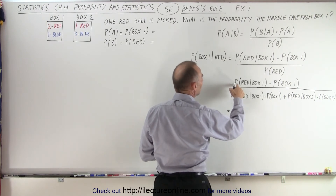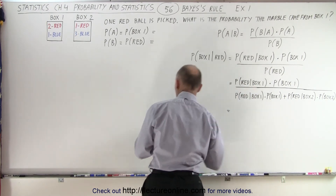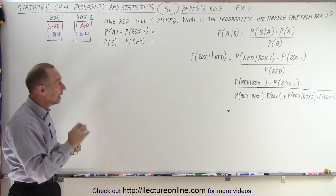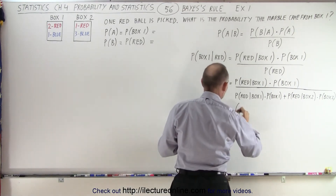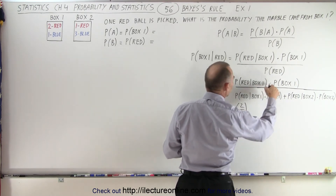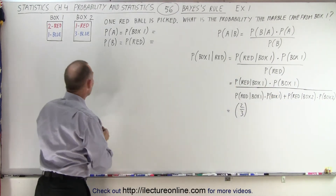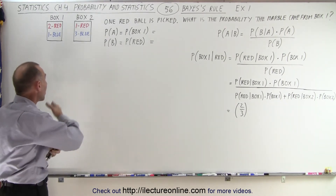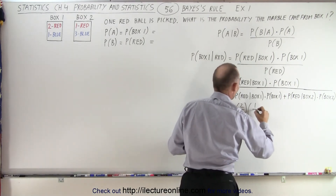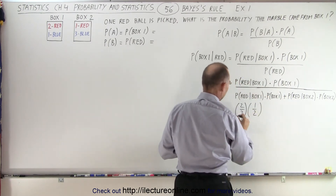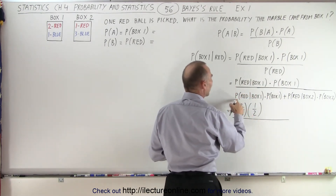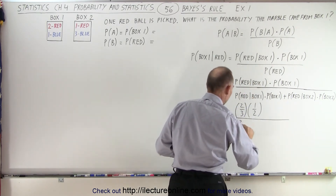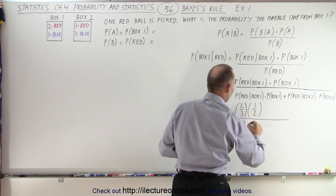So let's plug in some numbers and see what we get. First, we find the probability of picking a red marble given that we picked box one. In box one there are two red marbles and one blue marble, which gives us a two-thirds probability of picking a red marble. So the numerator is two-thirds times the probability of picking box one. Since we have two boxes chosen at random, that's a 50-50 chance, so we multiply by one-half. The first term in the denominator is exactly the same as the numerator: two-thirds times one-half.